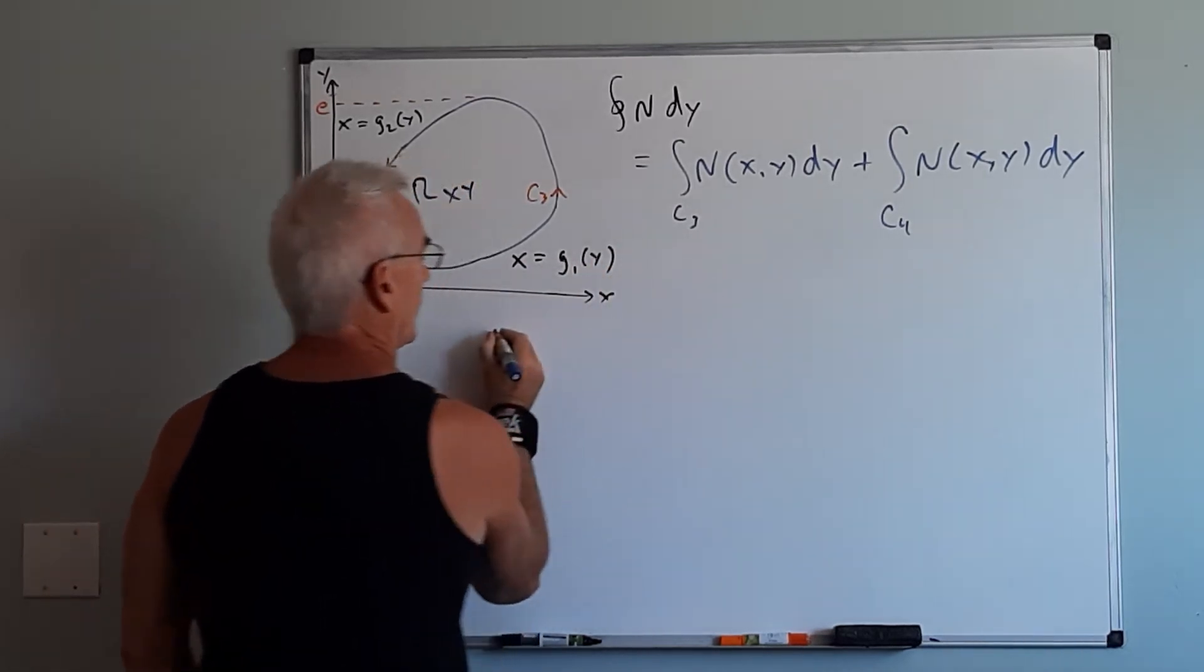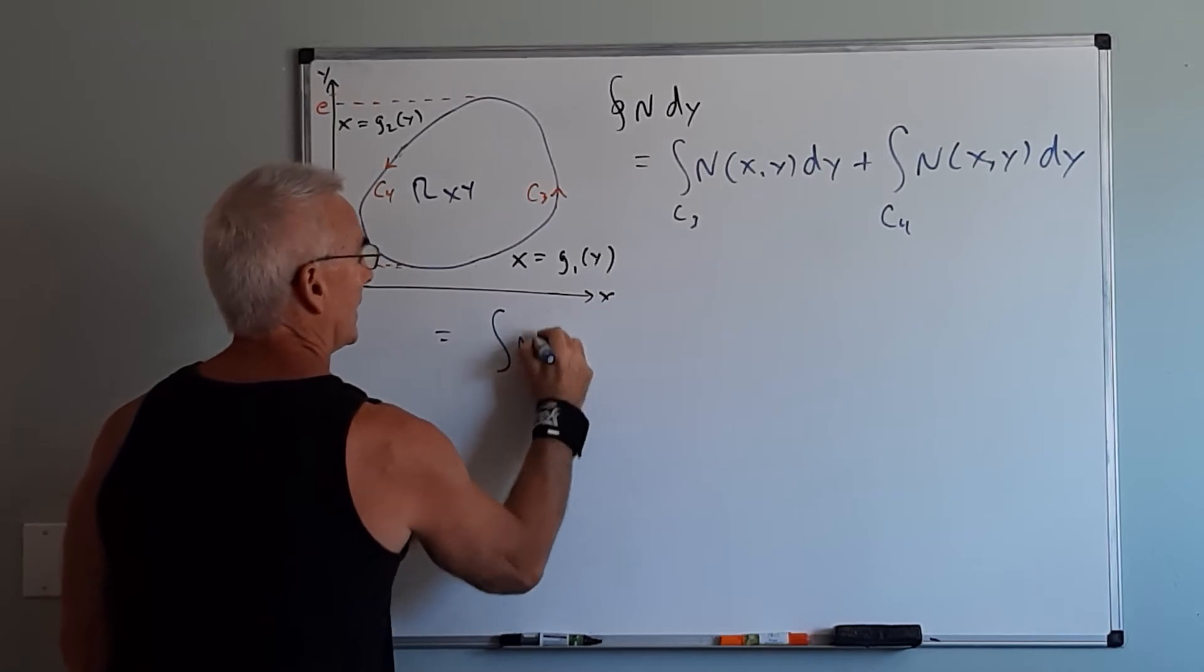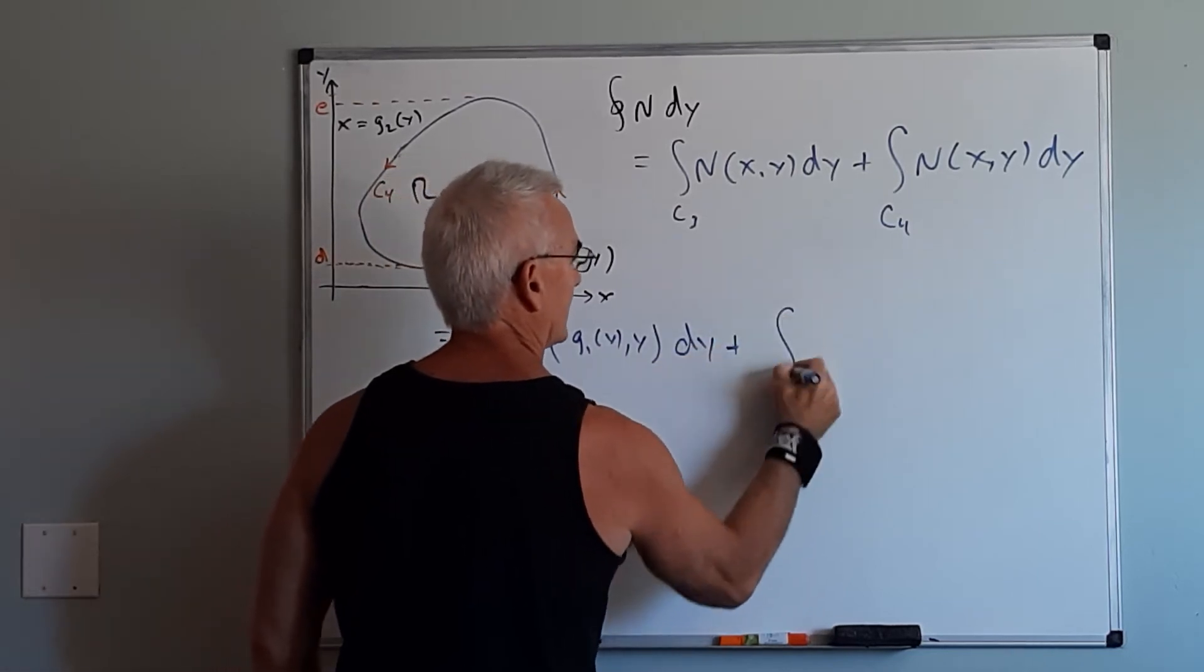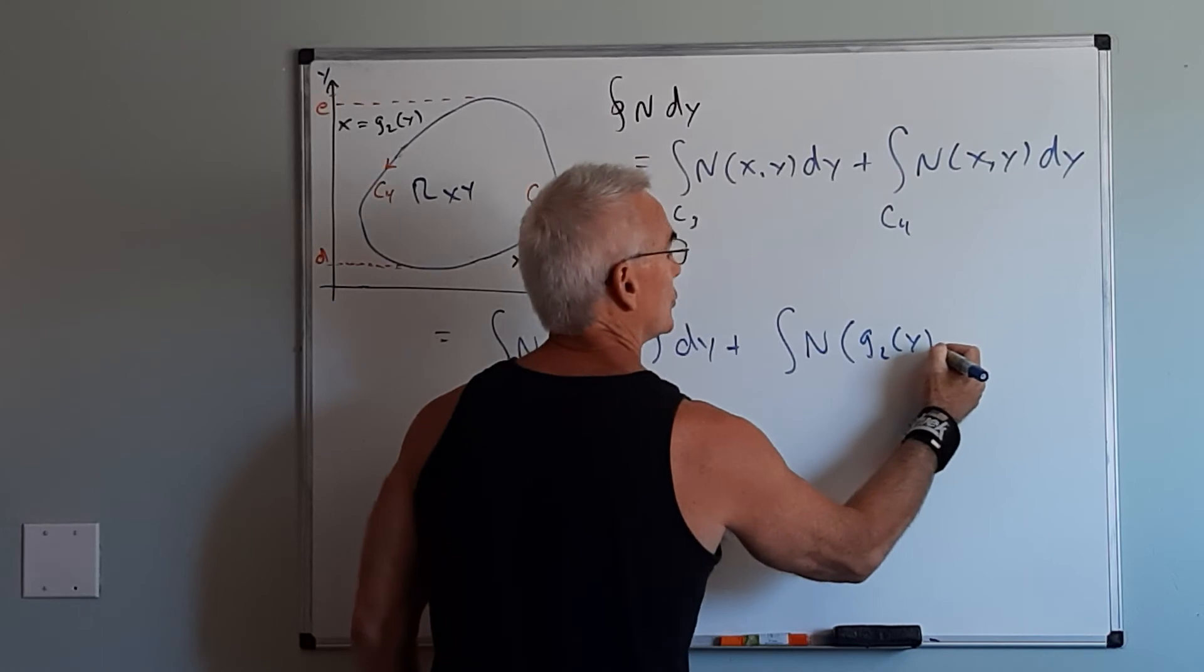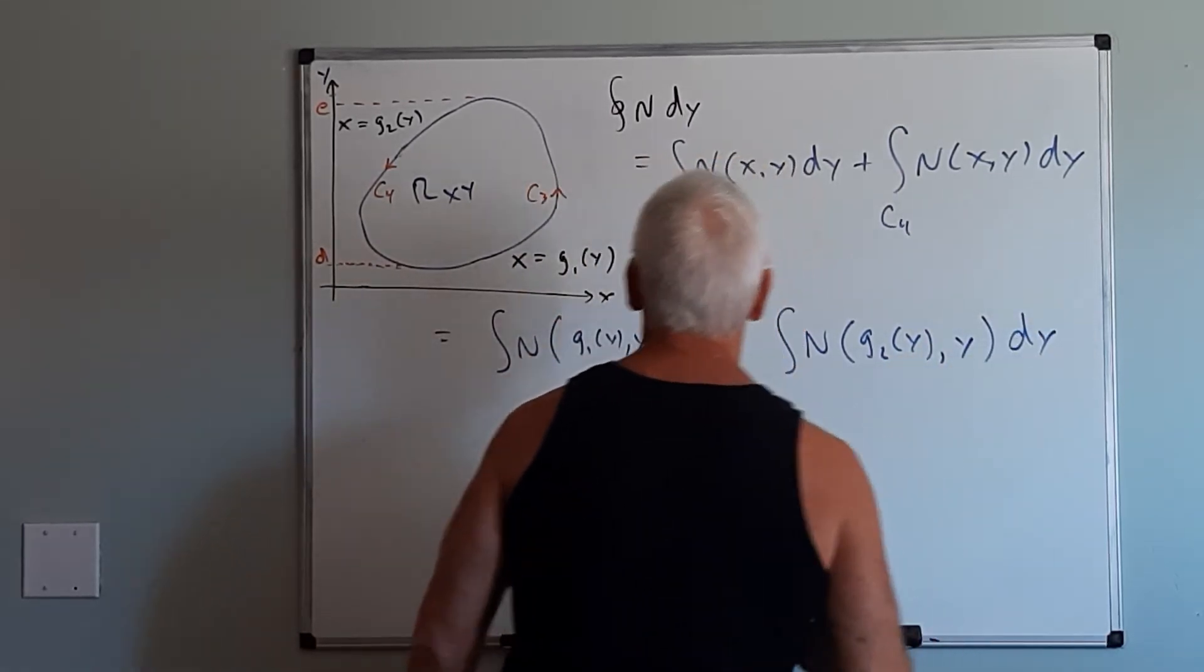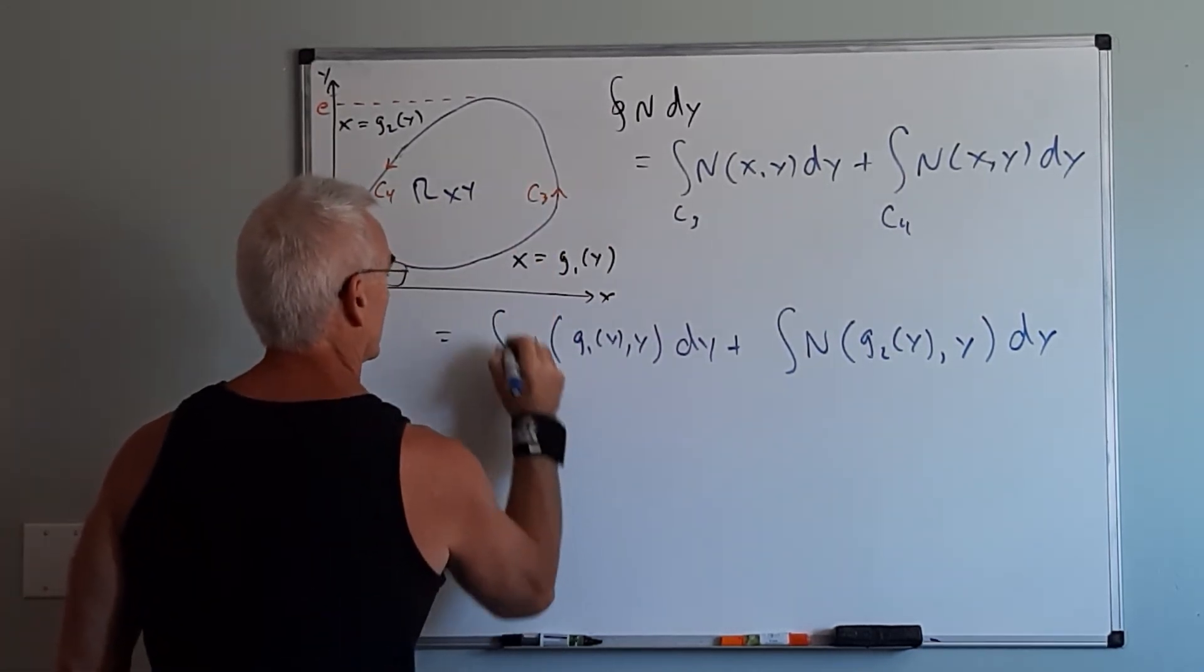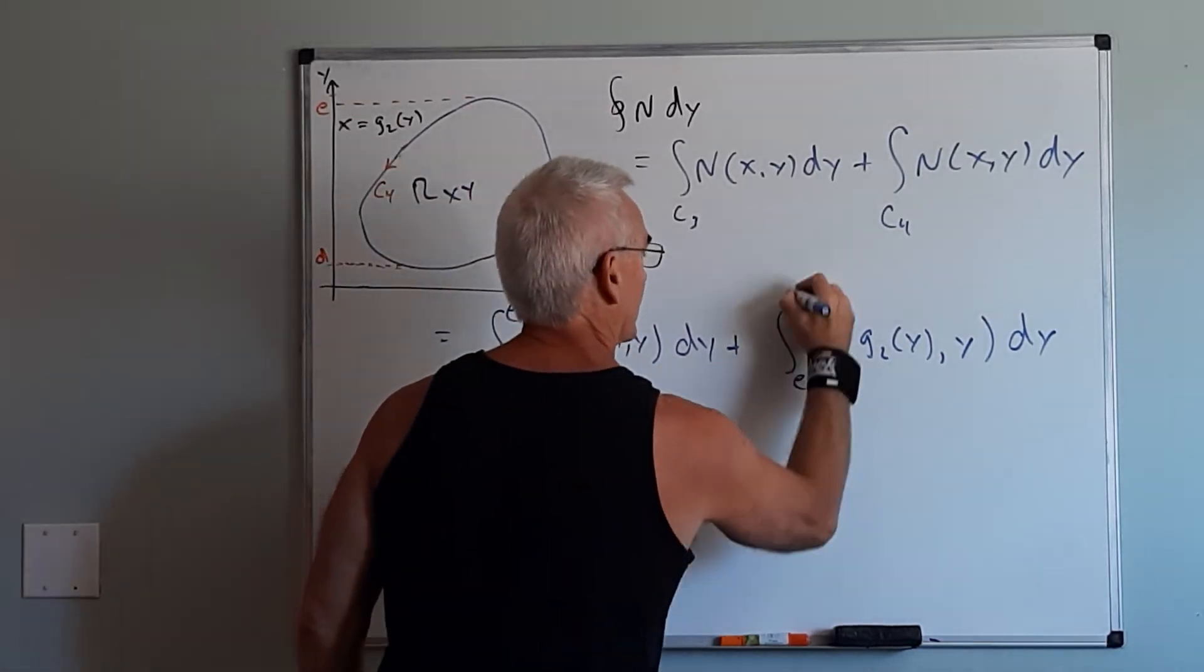So this first one I'll put away over here. The first one is going to be n of g1 of y,y plus n of g2 of y,y dy. The first one along c3 I'm going to go from d to e and then along c4 I'll go from e to d.